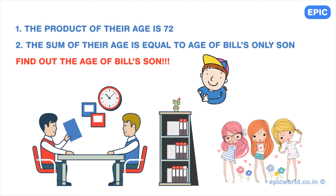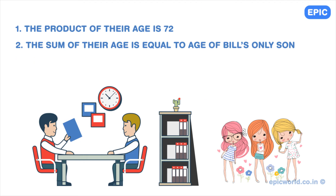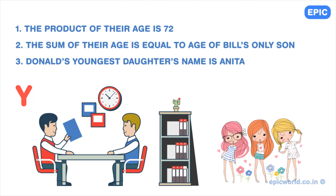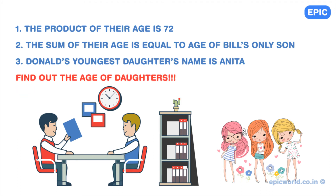Moving ahead with the puzzle, Donald gives him a third hint: his youngest daughter's name is Anita. Bill immediately tells the ages of his three daughters. Can you find out their ages now? You may pause the video and try solving this for four to five minutes.